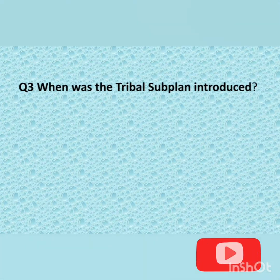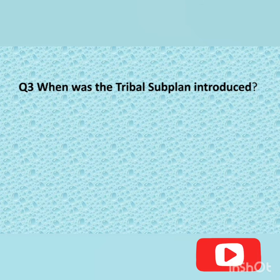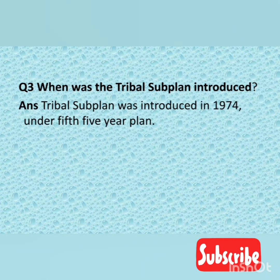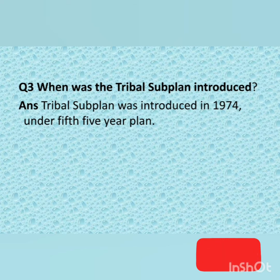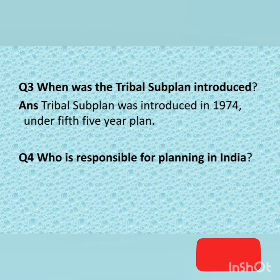Question number three: When was the Tribal Sub-Plan introduced in India? The answer is the Tribal Sub-Plan was introduced in 1974 under the Fifth Five-Year Plan. The TSP is a strategy for the rapid socio-economic development of tribal people.